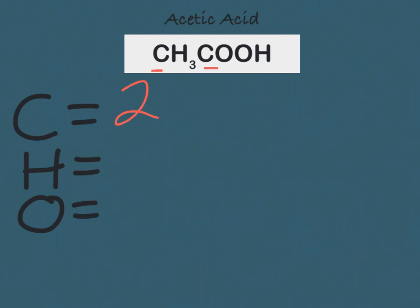Next we have the H's for hydrogen. We have one hydrogen at the end of the formula, but we also have an H with a subscript of three. The subscript tells us the number of hydrogen atoms present. So we have the subscript three plus the additional one hydrogen atom at the end of the formula, which gives us a total of four hydrogen atoms.